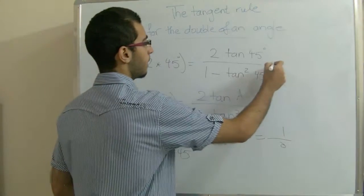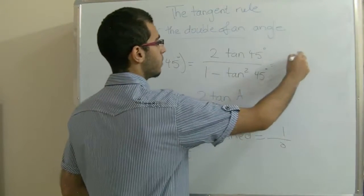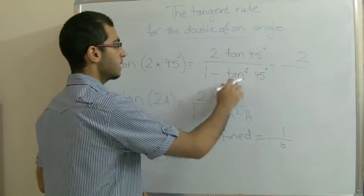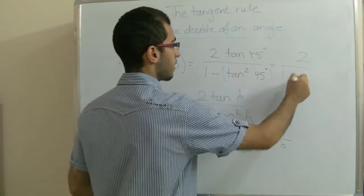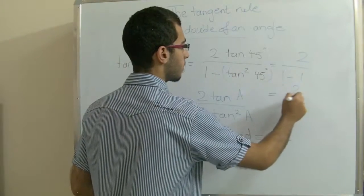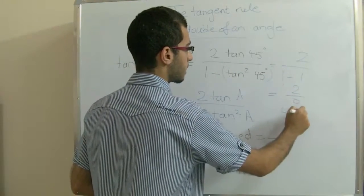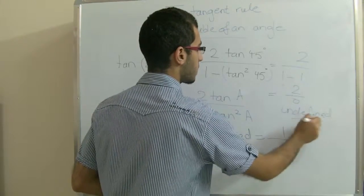So tan 45 actually equals 1. So 2 by 1 equals 2. And here, 1 negative 1 squared gives 1 minus 1, which is 0. So 2 over 0 - we get, finally, the result undefined. So we get the same result.